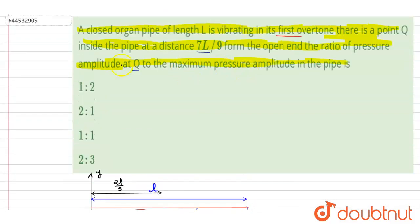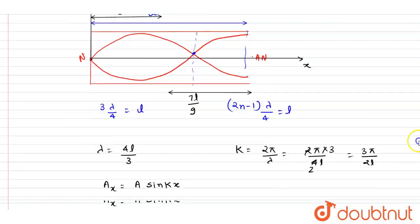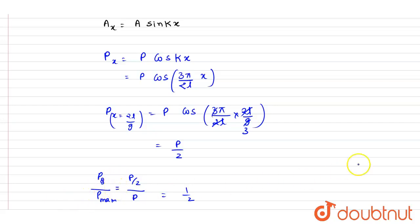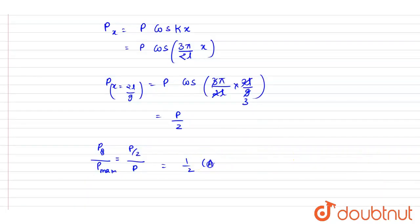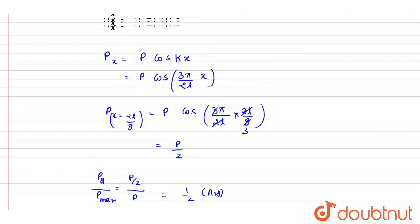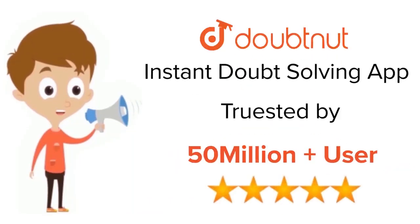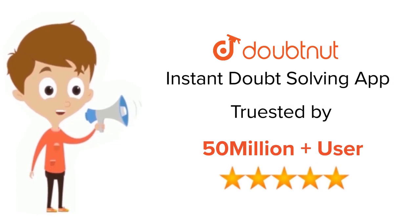The pressure at Q is P/2 and the maximum pressure in the pipe is P, so the ratio of pressure amplitude at Q to maximum pressure amplitude is 1/2. Option A is the correct answer. For class 6 to 12, IIT-JEE and NEET level — trusted by more than 5 crore students. Download DoubtNet today.